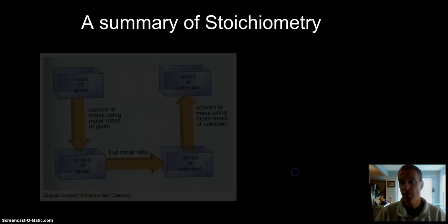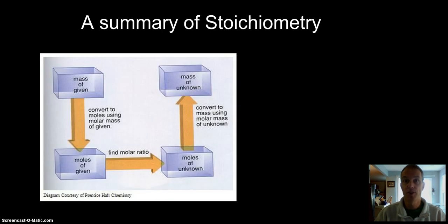A nice little summary is this graphic. This tends to work out really well. Whenever you're given a mass, first just convert it to moles using the periodic table. That's this step right here. Moles to moles, use the balanced equation. And then once you're done with this coefficient, you tuck them away and never use them again. Once you have your moles of your unknown, of what you're trying to get to, again, go back to the periodic table and get to the mass of unknown.